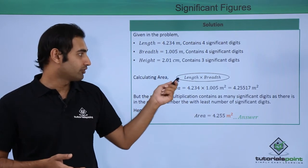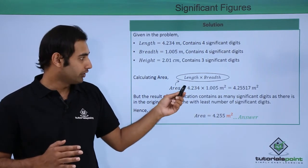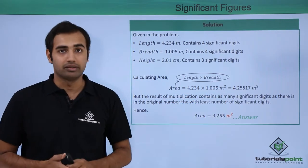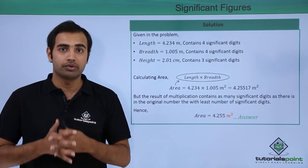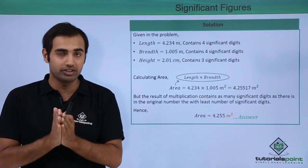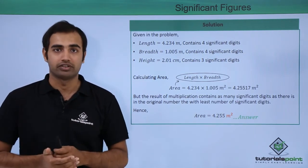Now to calculate area the formula we use is length into breadth, which is very clear. So if I carry on the multiplication of length and breadth I get the answer as this entire number over here. But this answer cannot be accepted as a final result because the result of multiplication should only contain as many significant figures as there are in the original number with the least number of significant figures.